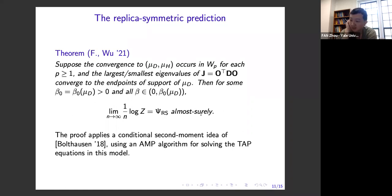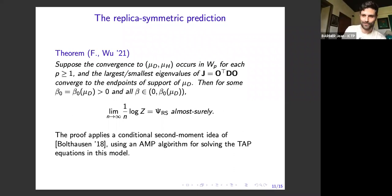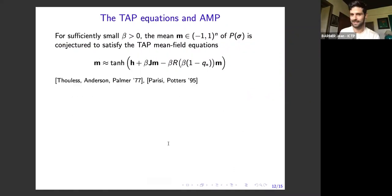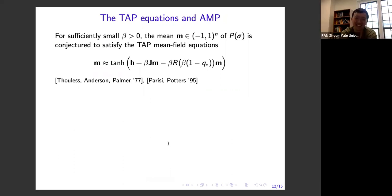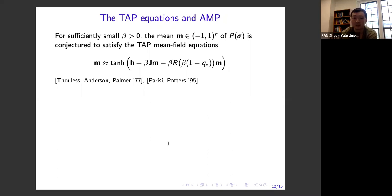The proof applies a conditional second moment idea introduced by Bolthausen in 2018, where we analyze an AMP algorithm for solving the TAP equations in this model. The TAP equations are the mean-field equations conjectured to be satisfied by the mean of this distribution at sufficiently high temperature — introduced for SK by Thouless, Anderson, and Palmer in 1977, and for rotationally invariant models by Parisi and Potters in 1995. We study the AMP algorithm for solving these TAP equations introduced by Cakmak and Opper in 2019.